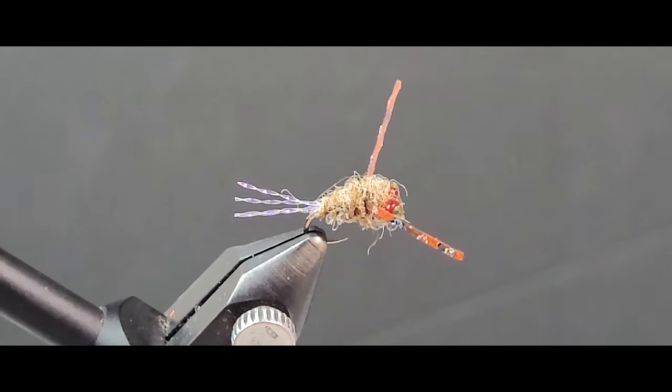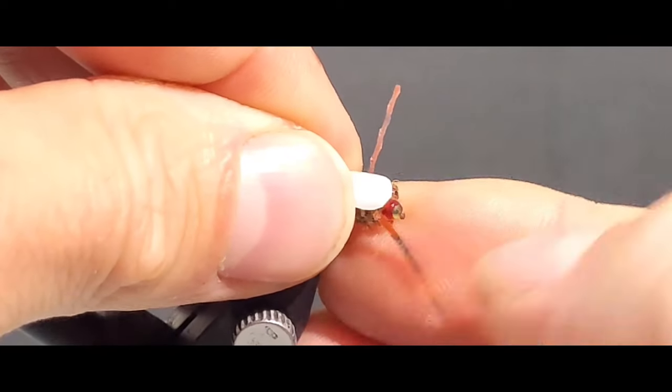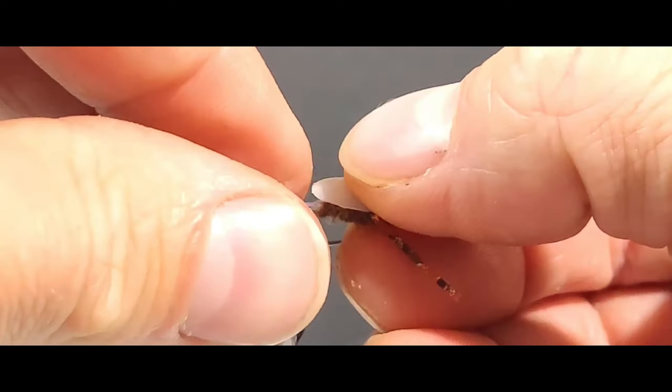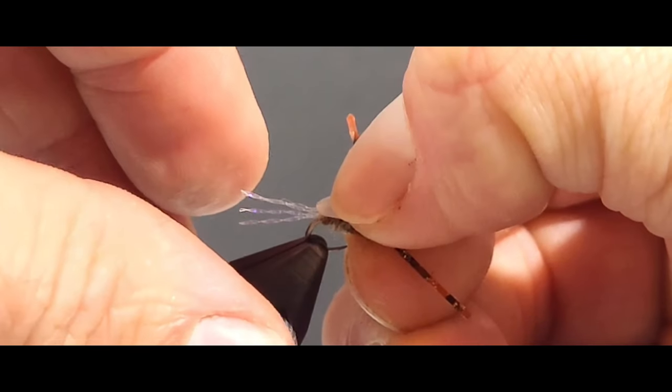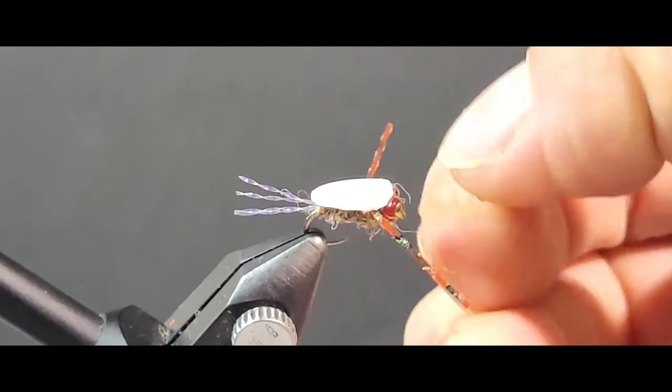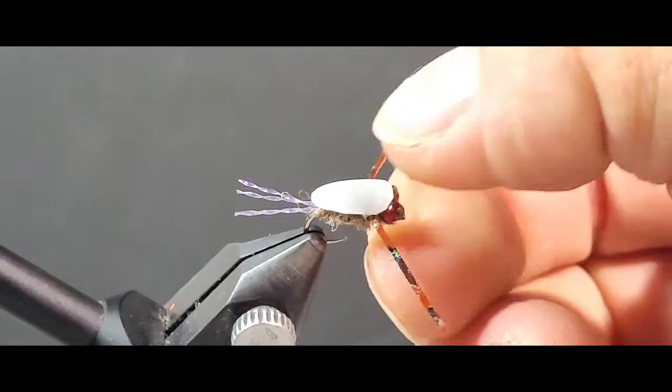This one I've trimmed down quite a bit just to fit this size 14 competition nymph hook. Then you'll apply a little bit of crazy glue or some acrylic nail resin and just hold that down to make sure that it securely bonds to the body of this fly.